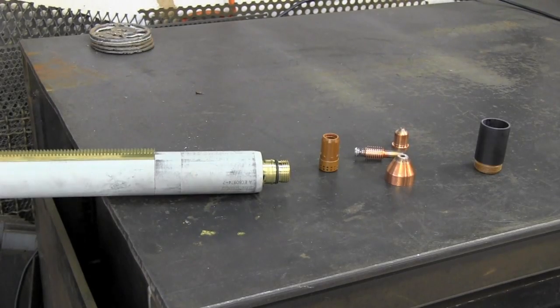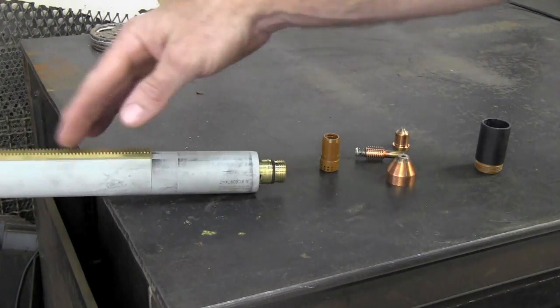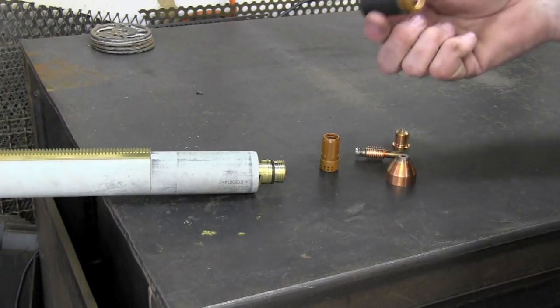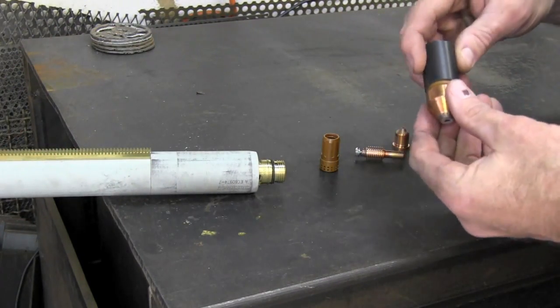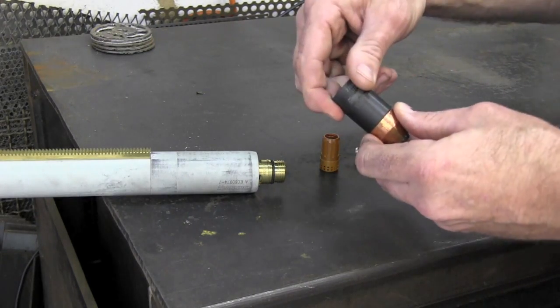Now let me take you through the building of the machine torch. Basically I have my machine torch laying here and what you'll want to do is take this first piece and screw this on all the way down.